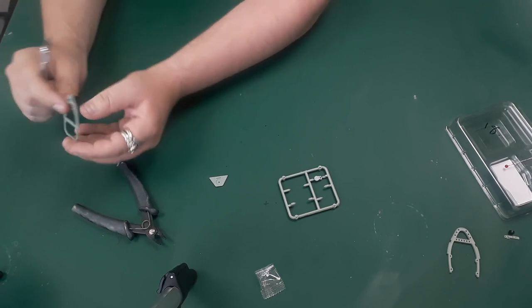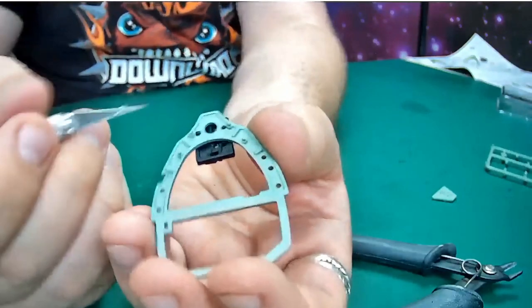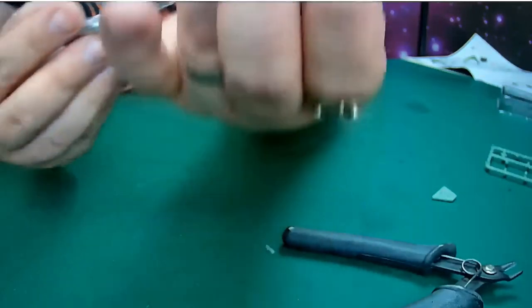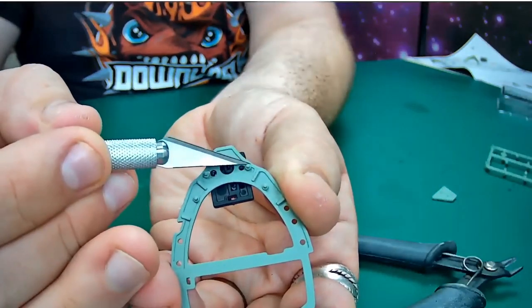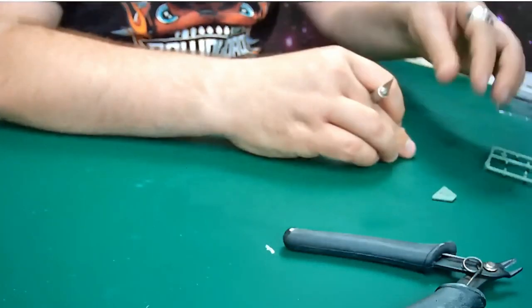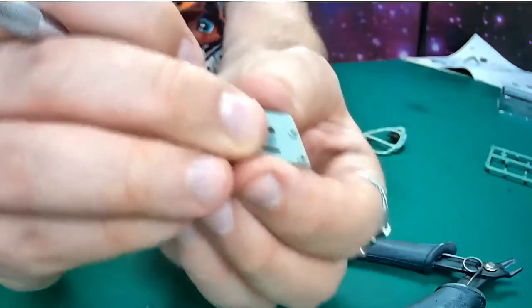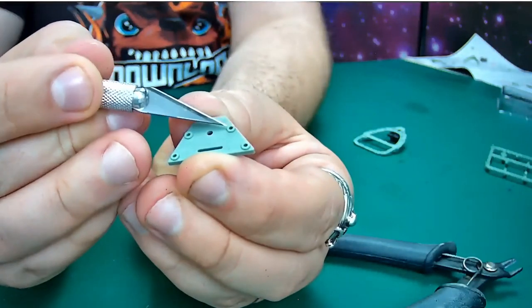And now this goes on the reverse of that part. You've got four little holes. Get rid of the bits of plastic off my knife. One there, there, there, and there.